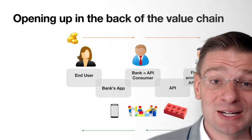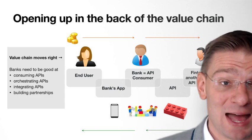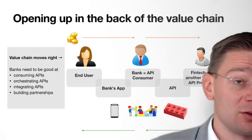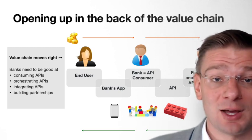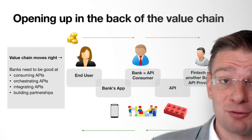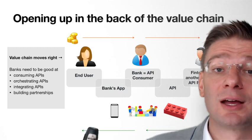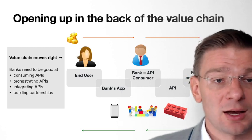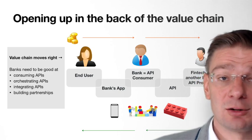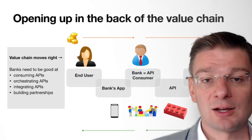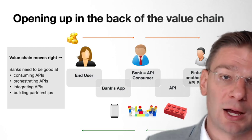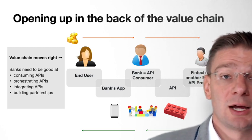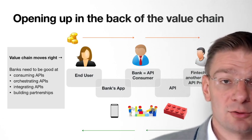That means banks, when you open up the value chain in the back, need to be good at consuming APIs and everything surrounding API consumption — like understanding the security of these APIs and consuming them in a secure manner. Orchestrating and integrating APIs is very important, since there may be several FinTechs and backend systems that you as a bank would consume. And of course, you need to build partnerships with those new suppliers of APIs.